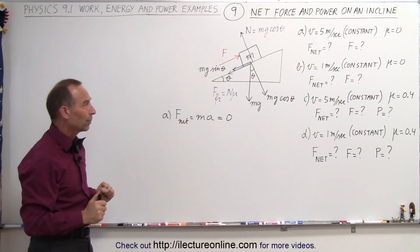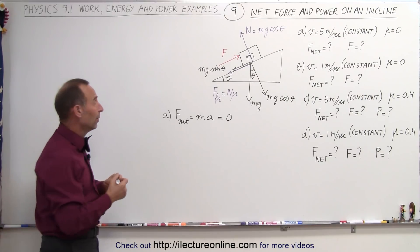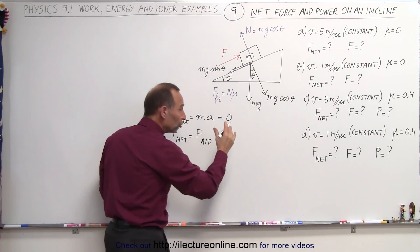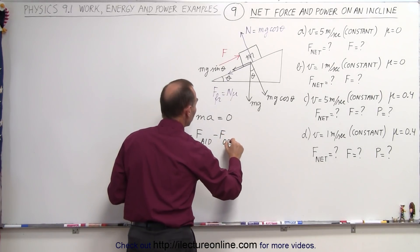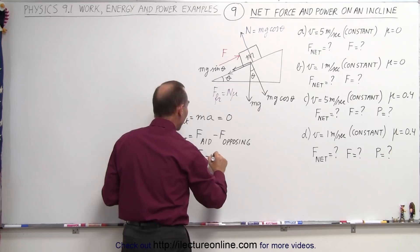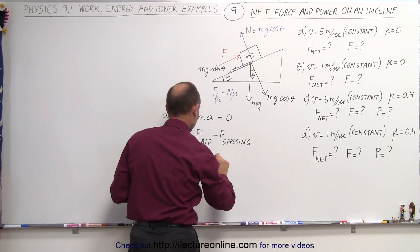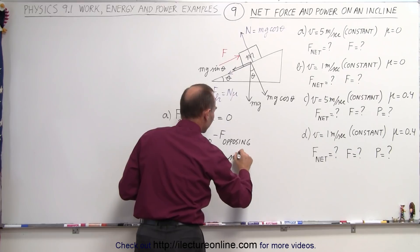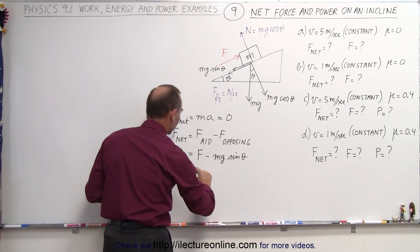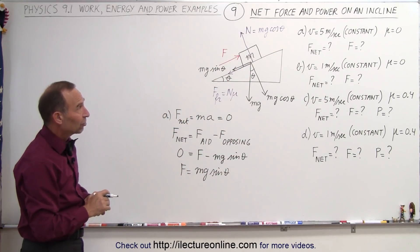So even though we're pushing a block up the incline, the net force on the block is equal to zero. However, the force that pushes the block up the incline is not zero, because the net force equals all forces aiding the motion minus all forces opposing the motion. That gives us F minus mg sinθ equals zero, so the force pushing the block up equals mg sinθ. We don't have to worry about friction because in part A, friction is zero.